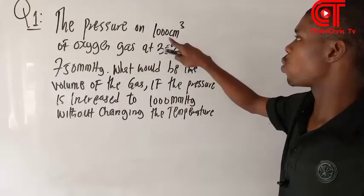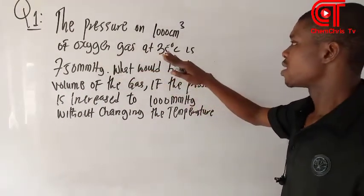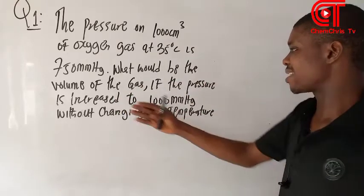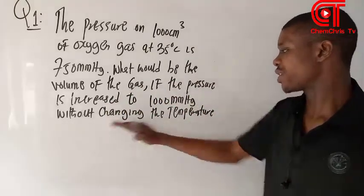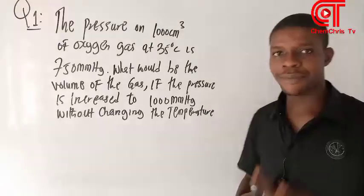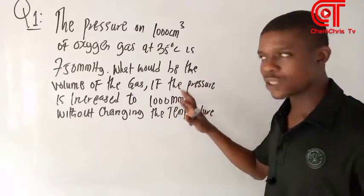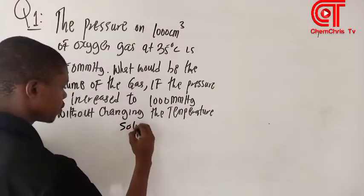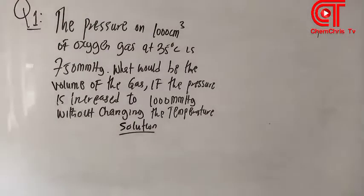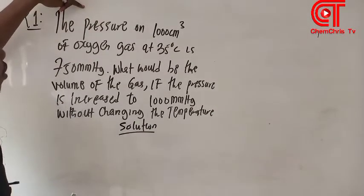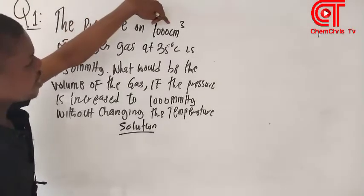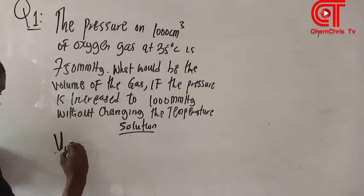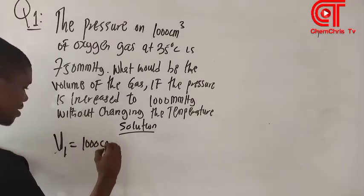Let's look at the first question. The pressure on 1000 cm³ of oxygen gas at 5 degrees centigrade is 750 mmHg. What would be the volume of the gas if the pressure is increased to 1000 mmHg without changing the temperature? Since temperature remains constant, this is a Boyle's Law question. Let's write down the parameters.